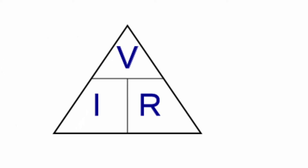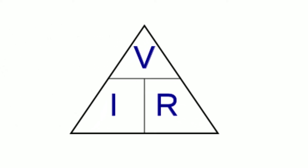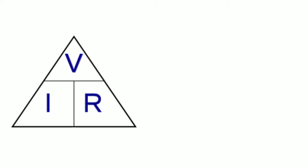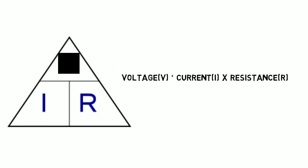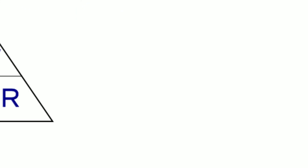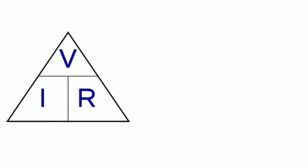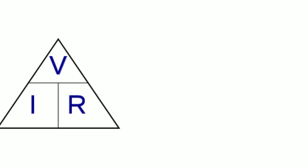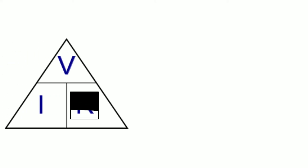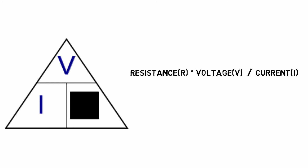You'll often see Ohm's law written as a triangle. From this triangle we can quickly work out the formula for any of the three values by covering the value we're looking for and looking at the formula we are left with. If we want to know volts we cover the V and are left with I multiplied by R. If we want to know the current we cover the I and are left with V divided by R, which is the resistance. And lastly, if we want to know the resistance we cover the R and are left with V divided by I.